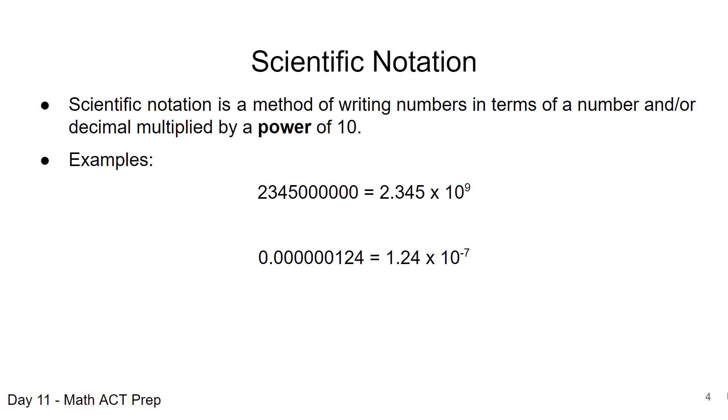Then also, like we said, we could have really small numbers where you have zeros after the decimal before we reach a number. And so that's equivalent to 1.24 times 10 to the negative 7.